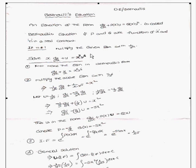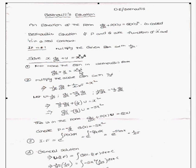Now consider one problem: solve x·(dy/dx) + y = x³·y⁶. First, convert this equation into Bernoulli's form. Dividing through by x gives dy/dx + y/x = x²·y⁶. Here, y to the power n is y⁶.